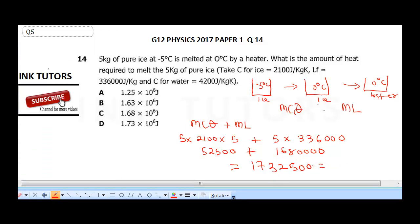Now, changing this to index form, move 1, 2, 3, 4, 5, 6, so that's 1.73 times 10 raised to the power of 6 joules, so that is the final answer.